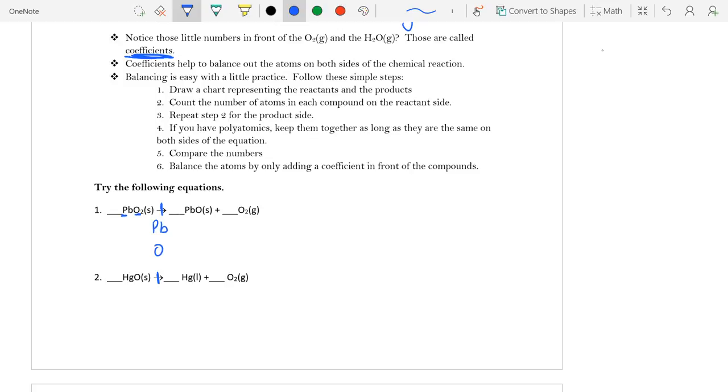That means we only have two elements, Pb and O. And it's on both sides. And the next thing we do is we count up. Okay. How many do I have? Well, I have one lead right here.